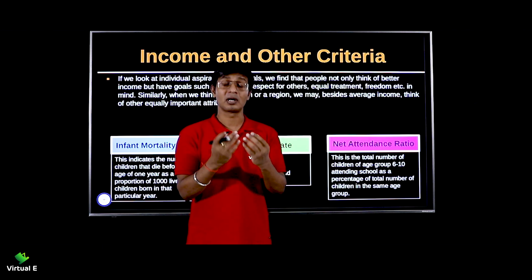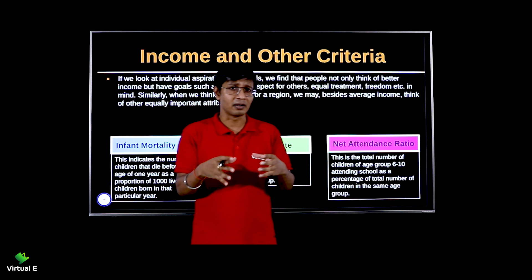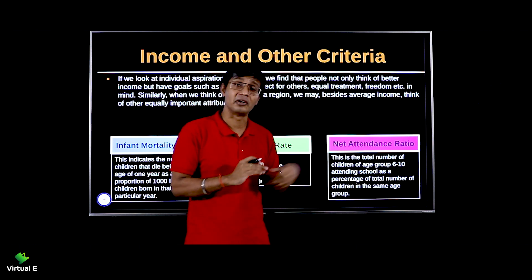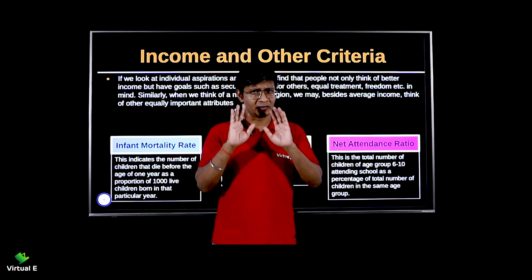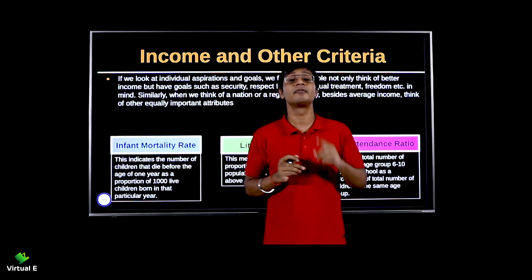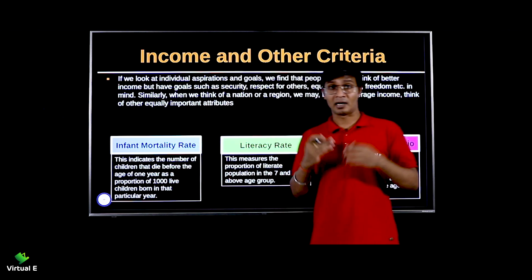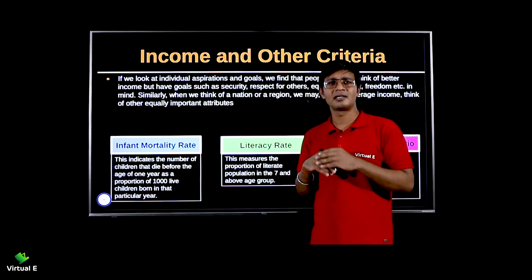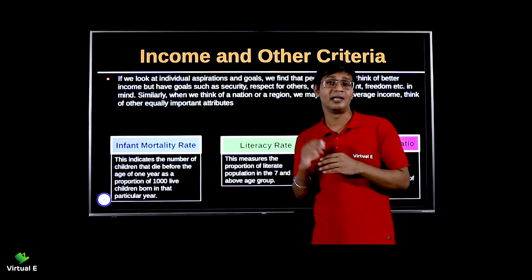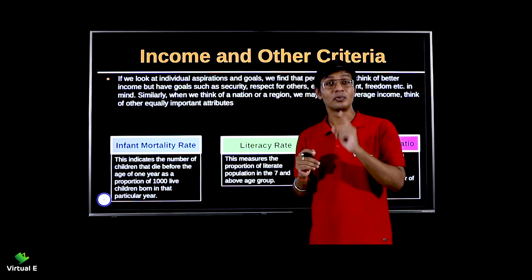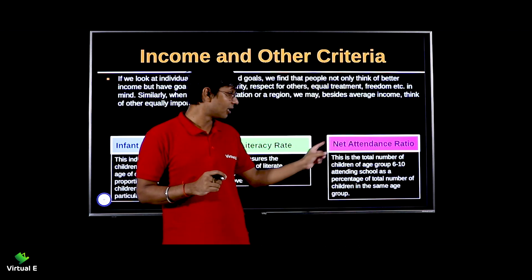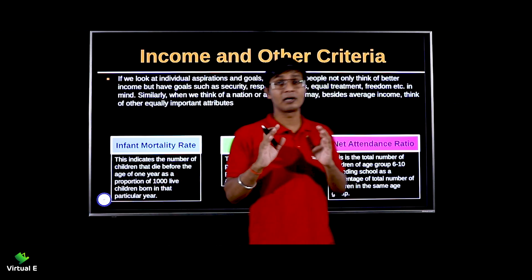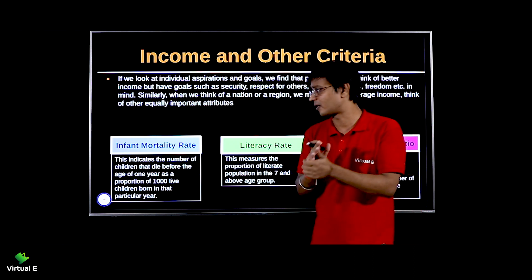If I have 100 children in my colony, out of 100 how many are attending school — that is called net attendance ratio. For example, suppose your class has a strength of 30 students. If attendance today is 27 and 3 are absent, your net attendance is 27. We consider net attendance ratio and literacy rate to check the education status of a country.